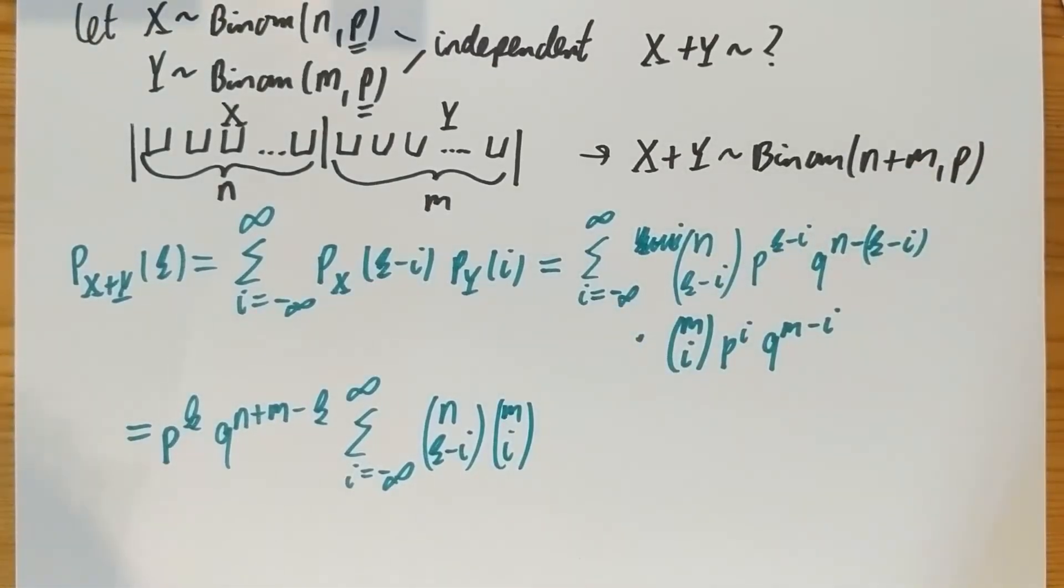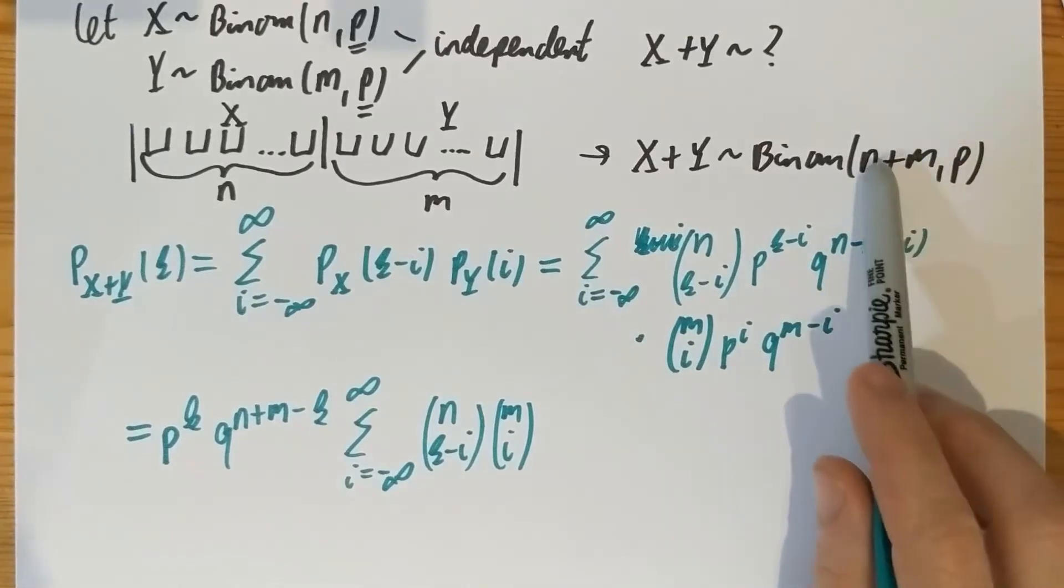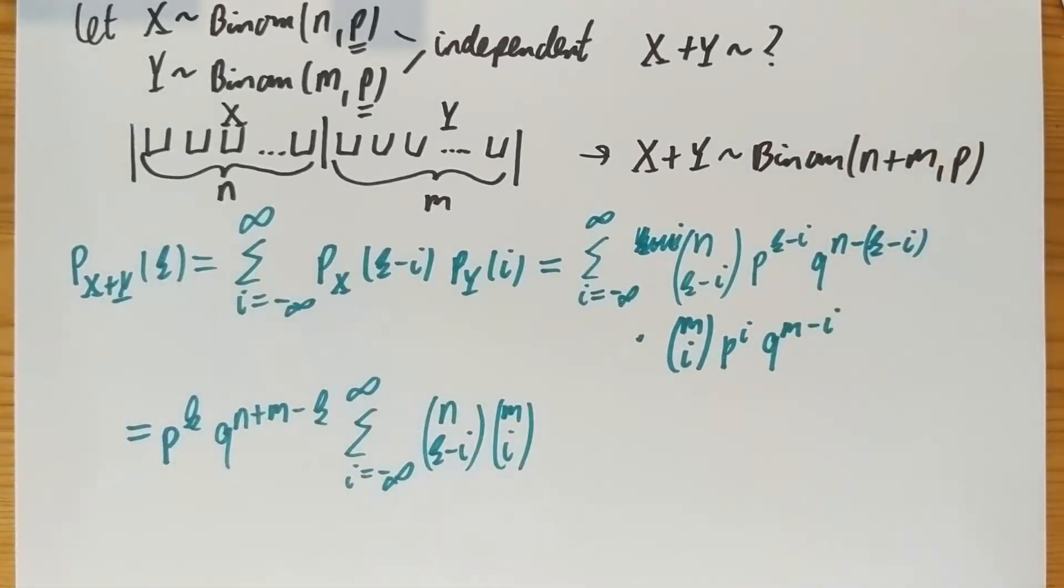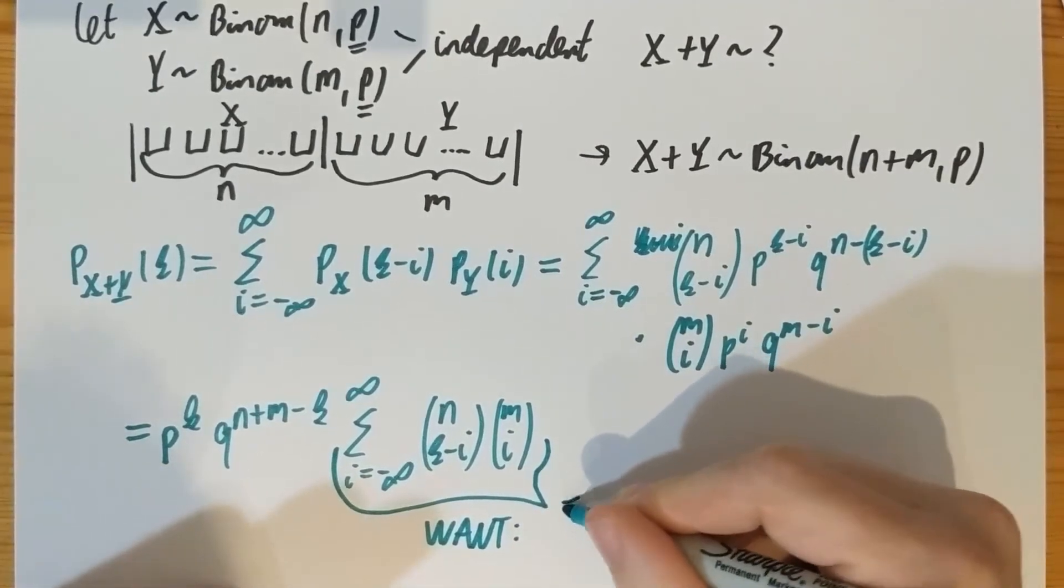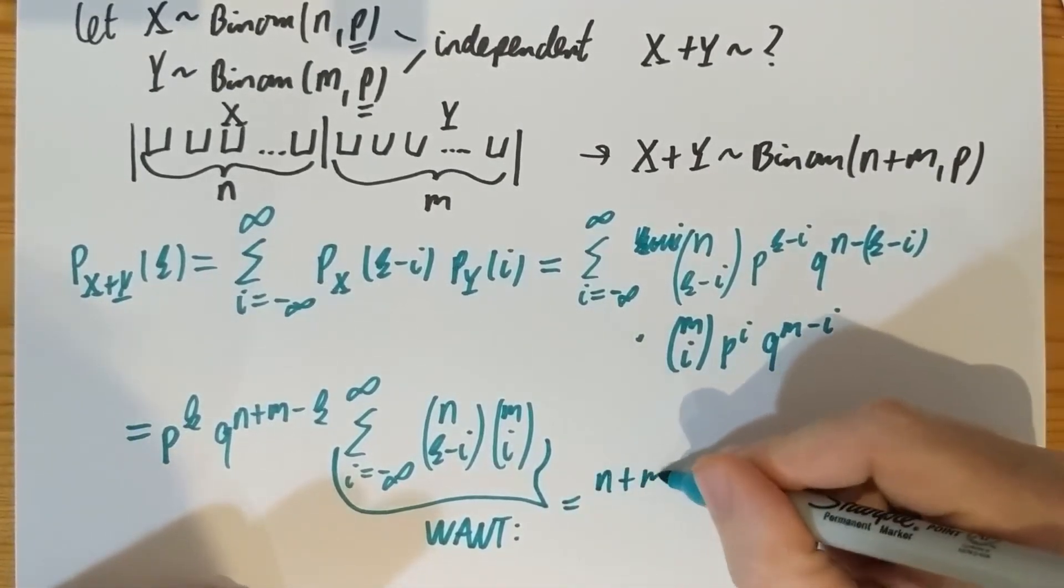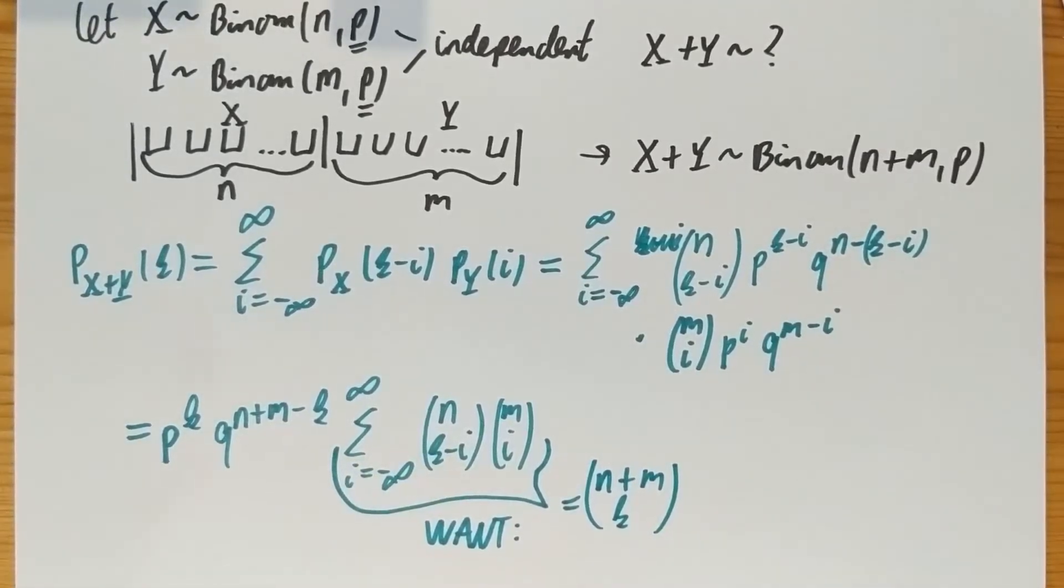And what do I want out of this? What I want out of this is that X plus Y is binomial, so this should really be P to the K, because I'm looking at this mass function at K, Q to the N plus M minus K, and I have those, times the binomial coefficient N plus M choose K. So what I really want to see is that this thing is equal to N plus M choose K, because if I can do that, then on the right-hand side, I do have the mass function of the binomial N plus M and P at K, at the value taken at K. So that's what I really want to do.